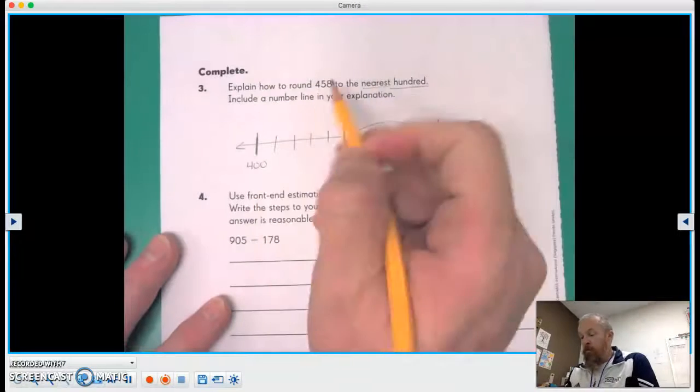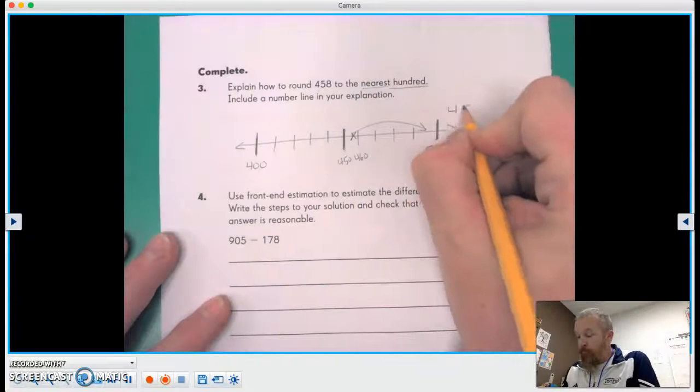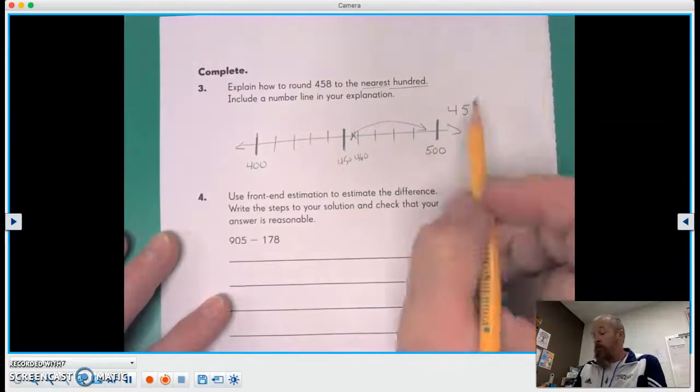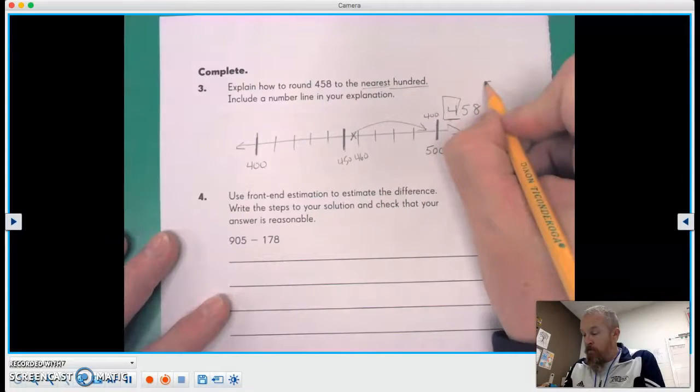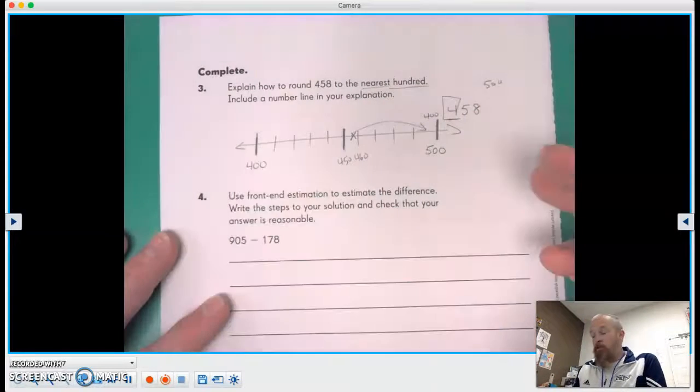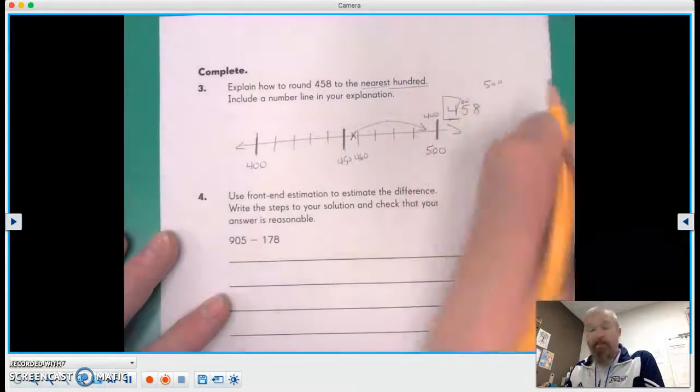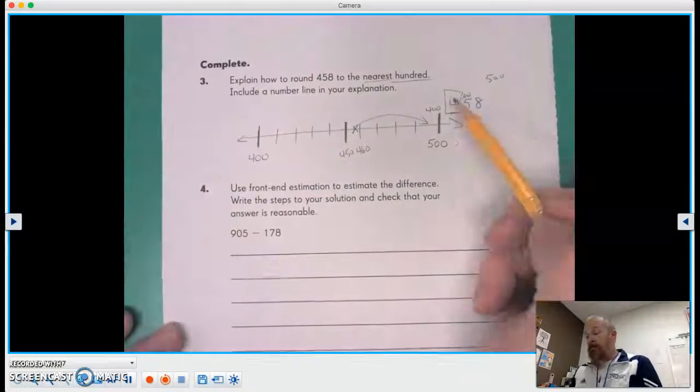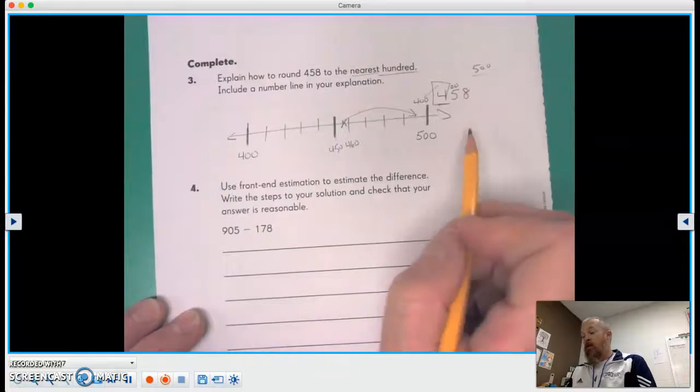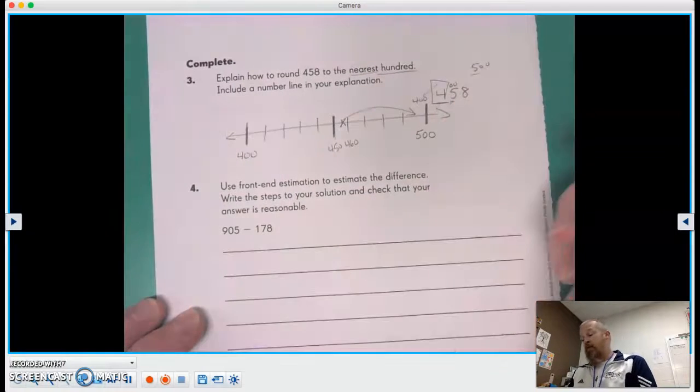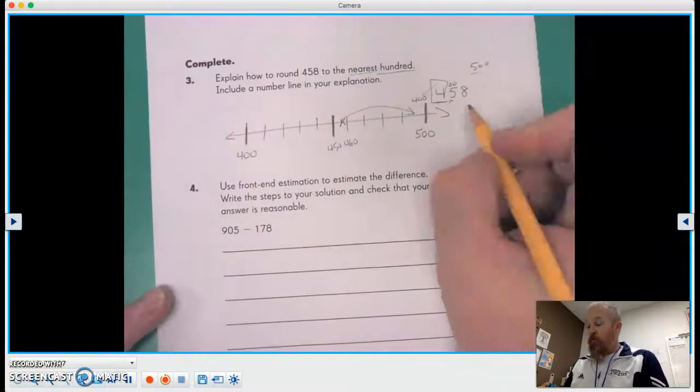We can look at the number 458. We're rounding to the nearest 100. So we can either be at 400 or we can be at 500. We're gonna take a look next door. I see a five. Four or less, we let it rest at the 400. Five or more, we're gonna raise the score. It is a five, so we're gonna raise the score and we would move it to 500.